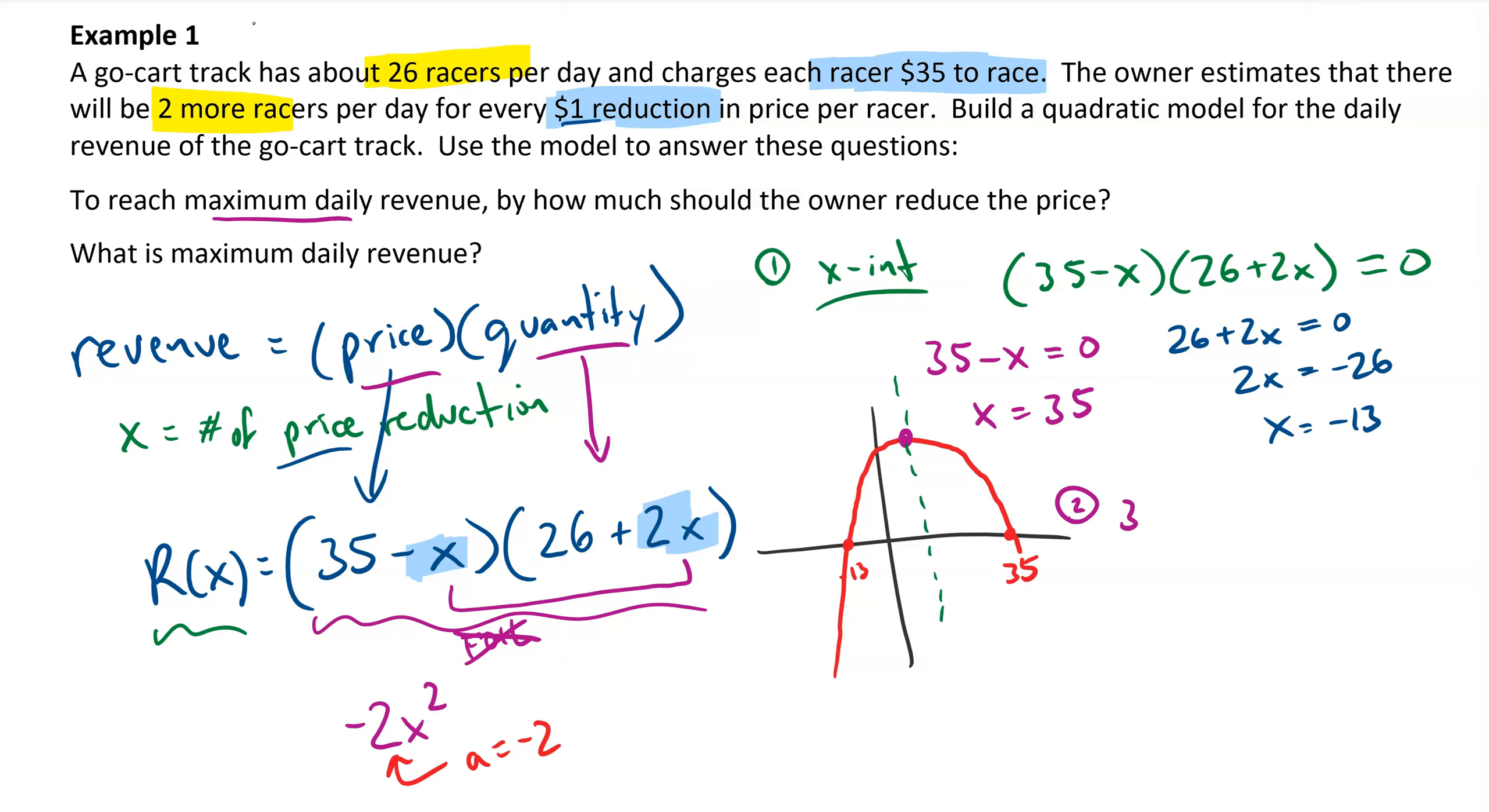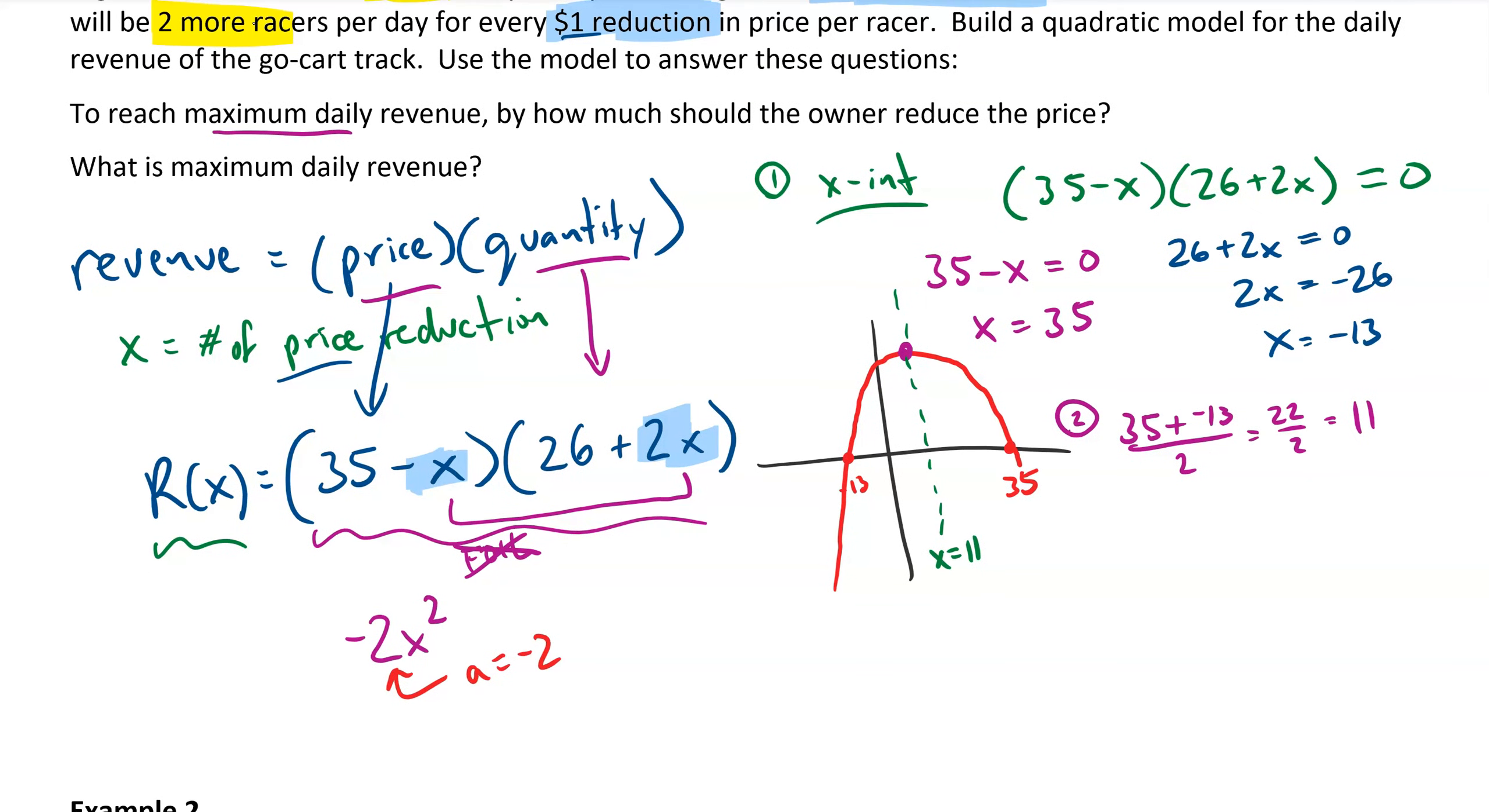We can find the line of symmetry by averaging together the two x-intercepts. So 35 and negative 13, adding those together, dividing by 2, I get 22 over 2, or 11. So the line of symmetry is x equals 11. That's also the x-coordinate of the vertex.